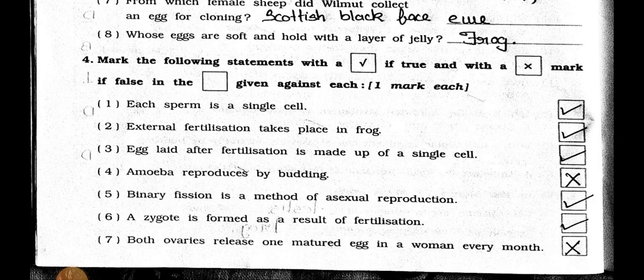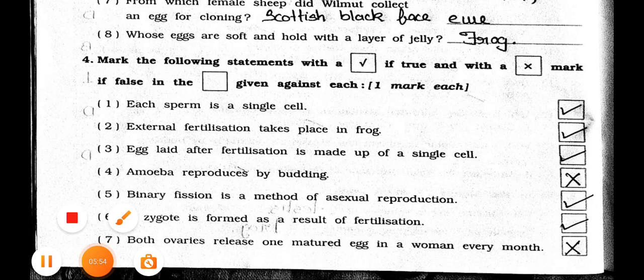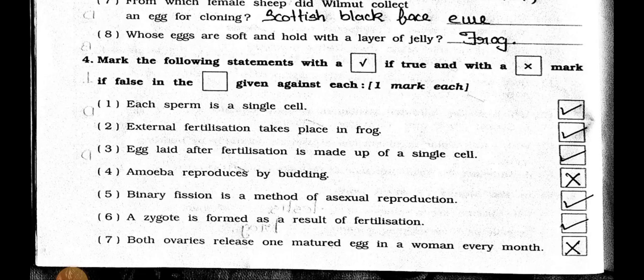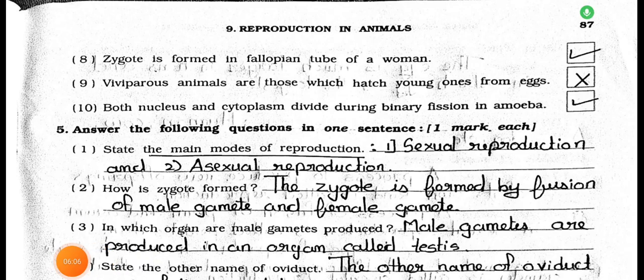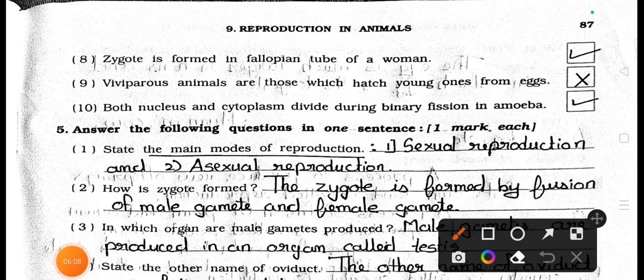Number 5: Binary fission is a method of asexual reproduction? It's true. Number 6: A zygote is formed as a result of fertilization? It's true. Number 7: Both ovaries release one mature egg in a woman every month? It's wrong, false. Number 8: Zygote is formed in a fallopian tube of a woman? It's true.